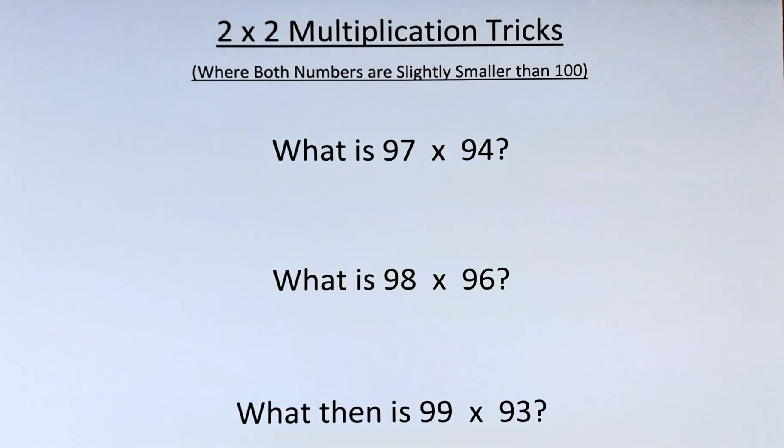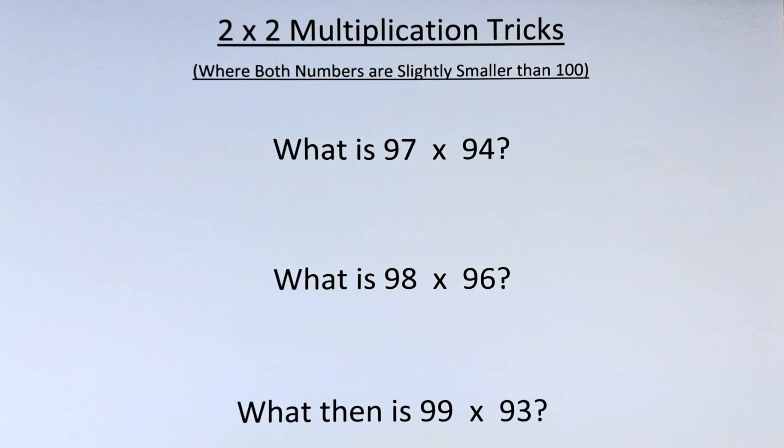Good day! This is a 2x2 multiplication trick where both numbers are slightly smaller than 100. In other words, both numbers are in their 90s.